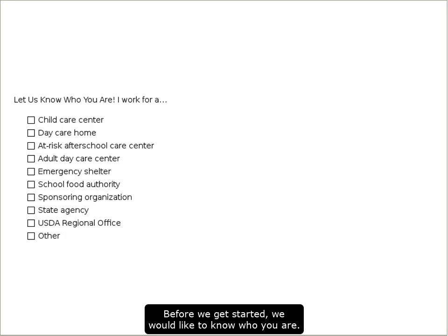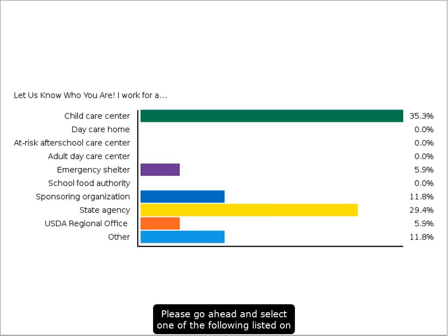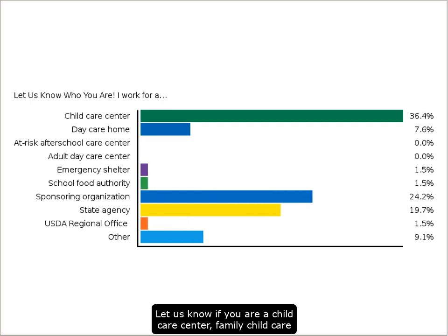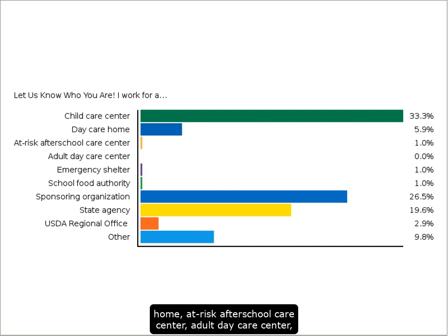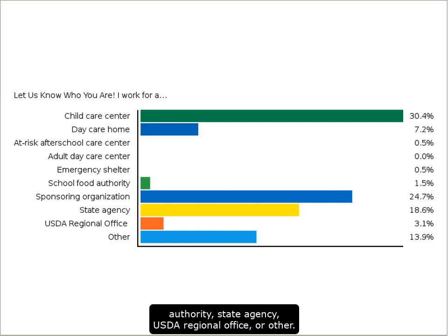Before we get started, we would like to know who you are. Please select one of the following: child care center, family child care home, at-risk after school care center, adult day care center, sponsoring organization, emergency shelter, school food authority, state agency, USDA regional office, or other.